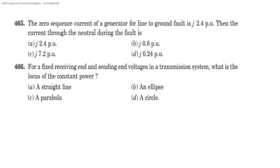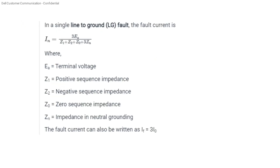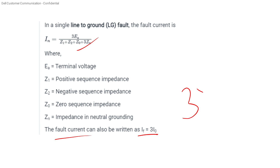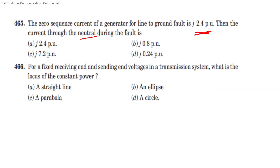Question 3: The zero sequence current of a generator from a line-to-ground fault is 2.4 j per unit. The current through the neutral during the fault — for single line-to-ground fault, the fault current In = 3 × Ea / (Z1 + Z2 + Z0 + 3Zn), where Z1 is positive sequence impedance, Z2 is negative sequence impedance, Z0 is zero sequence impedance, and Zn is neutral grounding impedance. The neutral current equals 3 × I0 = 3 × 2.4 = 7.2 per unit.